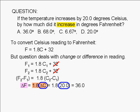Plugging in 20 degrees for delta C, we get a change of 36.0 degrees on the Fahrenheit scale. The correct answer is A.